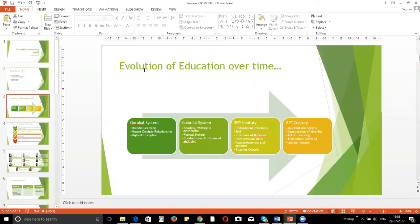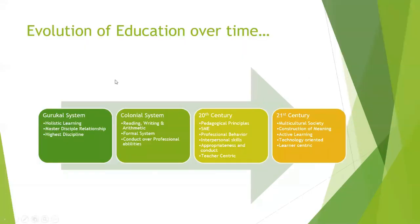I'll flip through some slides quickly so we can have a fair understanding of the progress we've made so far. We started with the evolution of education. Traditionally it was the Gurukul system, where the relationship was more of a master and disciple relationship, primarily focusing on all aspects of life. Education was not restricted to mathematics or language — it was holistic, covering warfare, archery, poetry, and music.